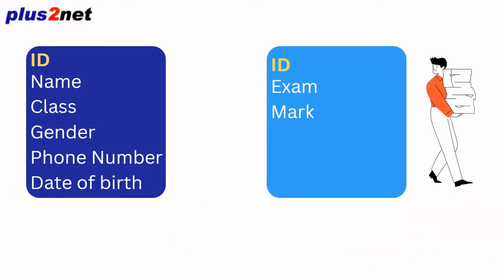Now let's see how we create a table. Say we have name, class, gender, phone number, and date of birth of a student — we keep that in a student master table. If a student appears in multiple exams — exam 1 got 10 marks, exam 2 got 9 marks, exam 3 got 12 marks — every time you need not store the name, class, gender, and phone number again. Instead, we create another table to store the exams and the marks. To link these two tables, we must have a unique ID for the student, which also links to the exam table. So the ID field maintained in both places links which student, which exam, and what the mark is.